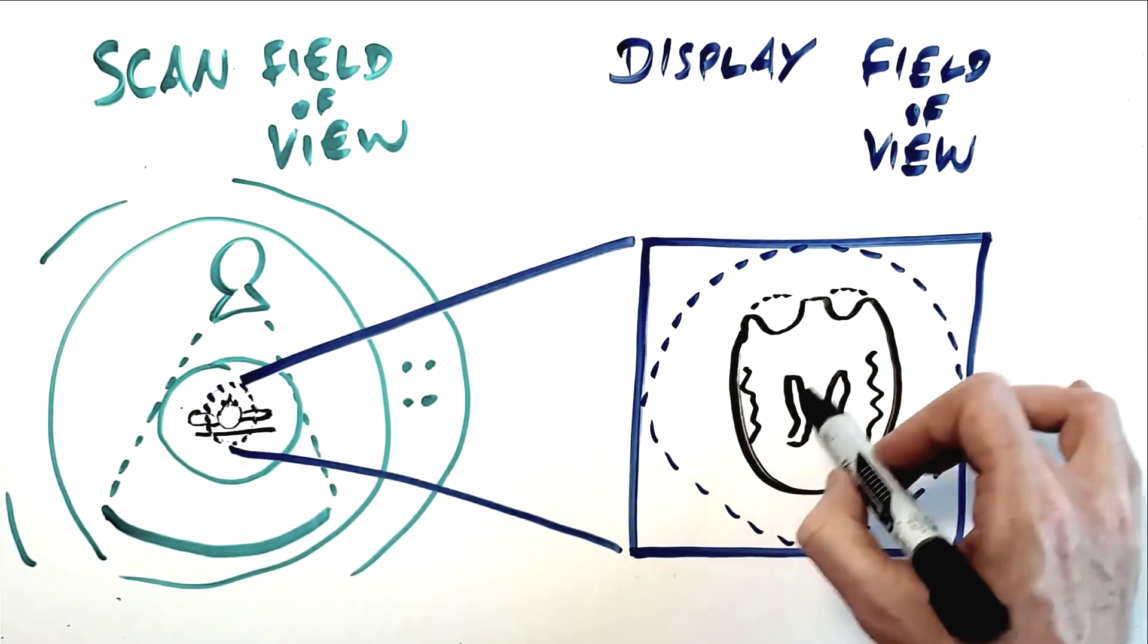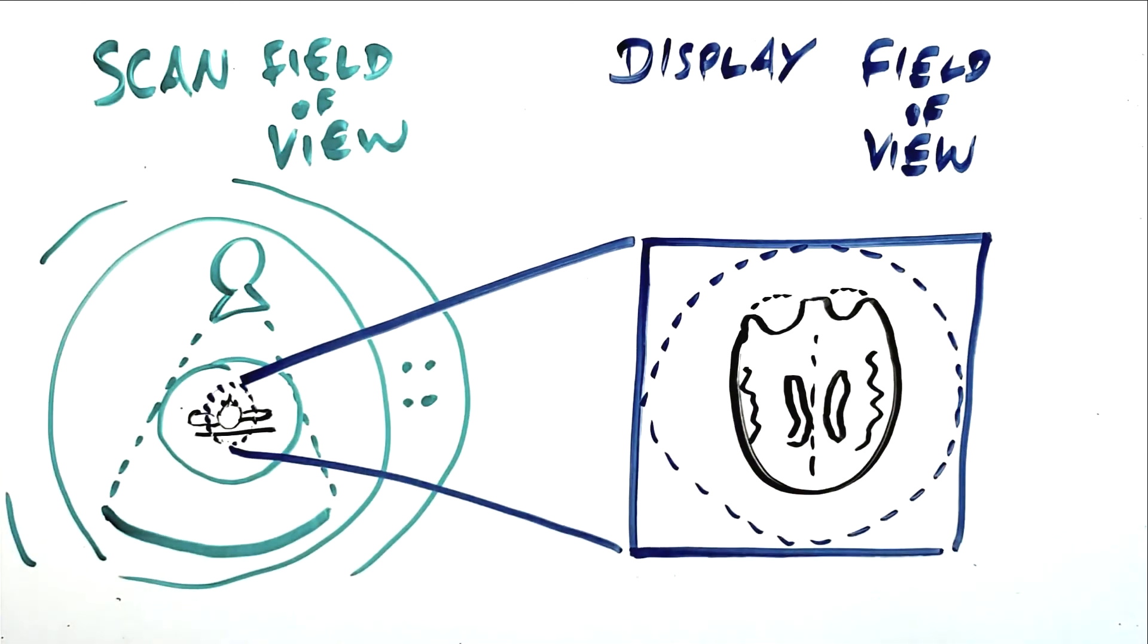Similarly, a technologist may produce reconstructions with a smaller display field of view. For example, if you're producing a bone reconstruction of the lumbar spine from an abdominal scan, where it's not necessary to include the full abdomen in the display field of view, and you just want to include the spine.